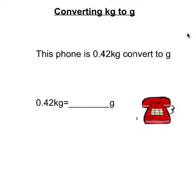So try and work out this question here. The phone is 0.42 kilograms — convert this to grams. If you can, you can go on to Mathletics on converting grams to kilograms. Otherwise, watch the rest of the video. Pause the video now.